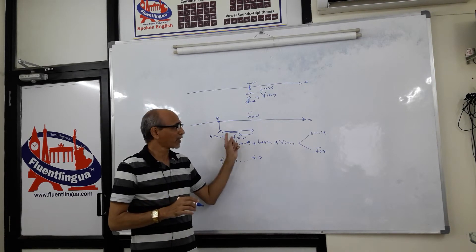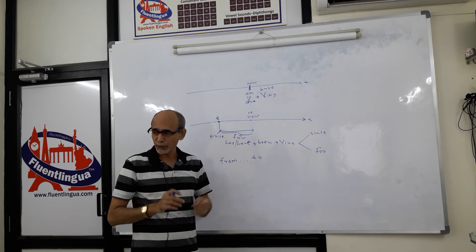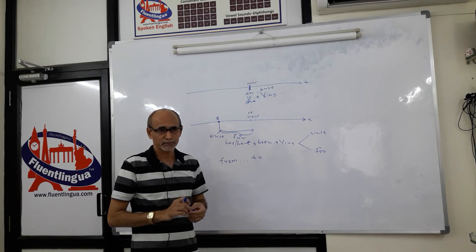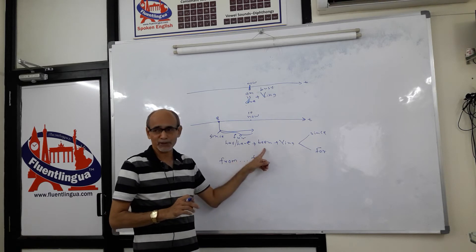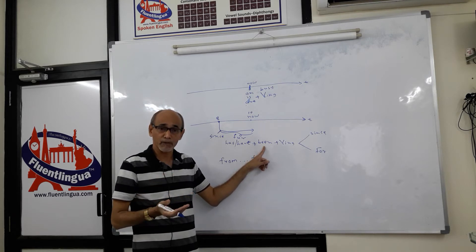So remember, past to present, either continuity of an action or continuity of a situation, use has been or have been. Basically has or have in the past participle form. Sometimes we may not have been, we may have an action verb.